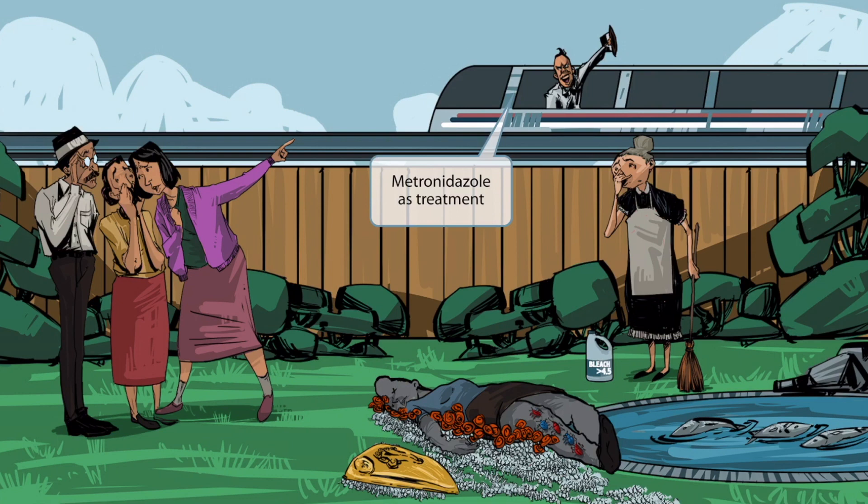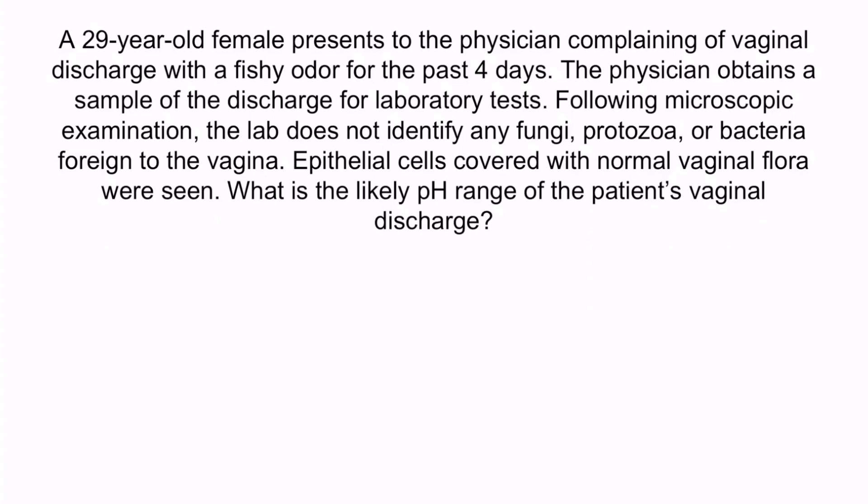Now let's do a question to reinforce what you've learned. A 29-year-old female presents to the physician complaining of vaginal discharge with a fishy odor for the past four days. The physician obtains a sample of the discharge for laboratory tests. Following microscopic examination, the lab does not identify any fungi, protozoa, or bacteria foreign to the vagina. Epithelial cells covered with normal vaginal flora were seen. What is the likely pH range of the patient's vaginal discharge?